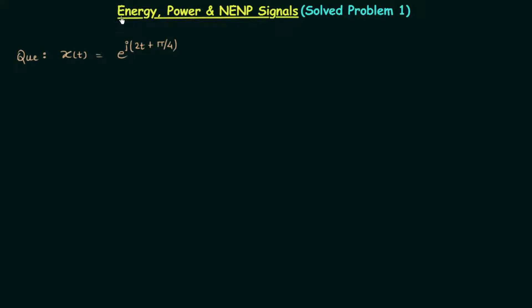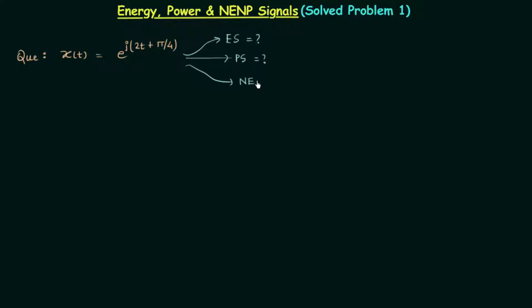In the last few lectures we completed energy signals, power signals, and neither energy nor power signals, and now it is very easy for us to solve questions based on these three signals. In this lecture we will solve one question in which the signal x(t) equals e raised to the power j(2t + π/4), and we need to find out what type of signal it is — energy signal, power signal, or neither energy nor power signal. We can do this by two different methods.